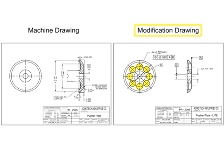Modification drawings also incorporate mandatory changes — for example, safety, reliability, or application extension into existing delivered equipment. This type of drawing can also be referred to as a make-from drawing.